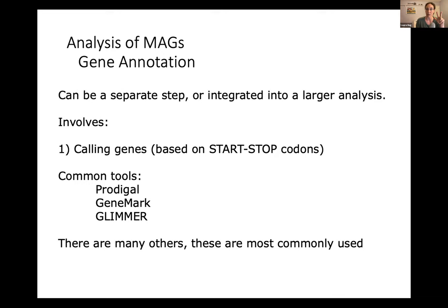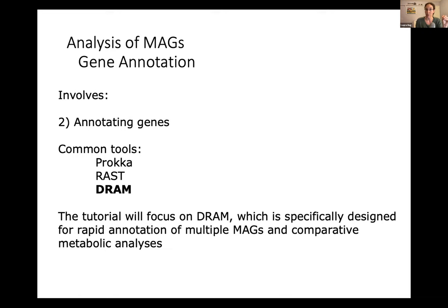When we annotate genes, we take the open reading frame, translate it into a protein sequence, and ask: what is this protein most closely related to out of everything we've ever seen? Can I confidently say this is a pyruvate kinase, this is involved in glycolysis? Or does it look like a hypothetical protein we've never seen before, or a hypothetical protein we see all the time but have no idea what it is? These all have different levels of confidence. We're going to focus on DRAM — Distilled and Refined Annotation of Metabolism — which was specifically designed to facilitate comparative metabolic analysis: being able to look across MAGs and identify what they're capable of doing. DRAM annotates using a suite of different databases including KEGG and UniRef.